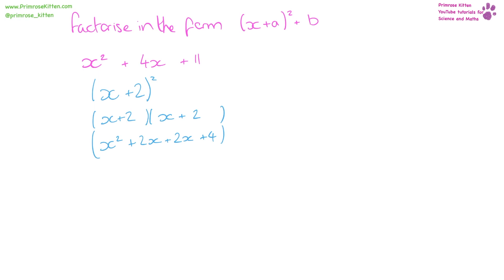So going from four to eleven, we need to add on seven. So our actual answer is going to be x plus two squared plus seven.